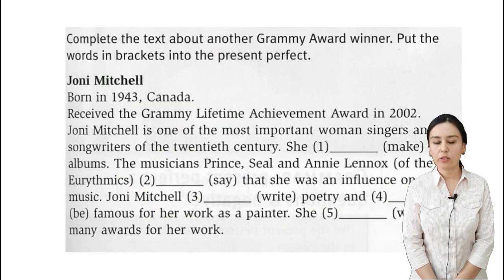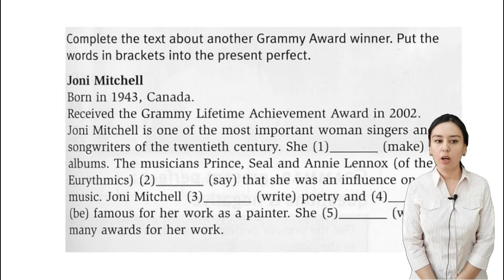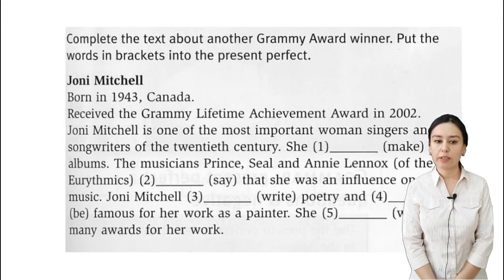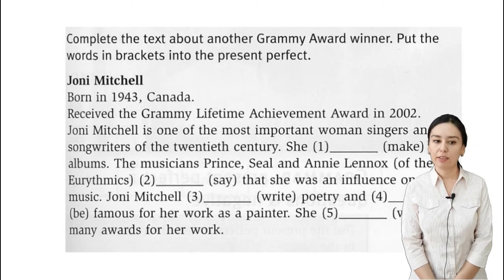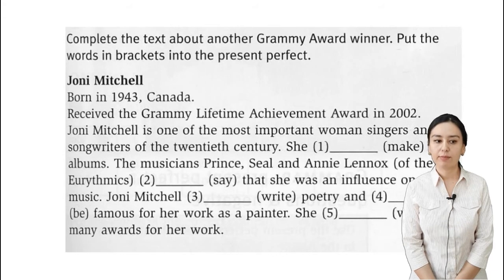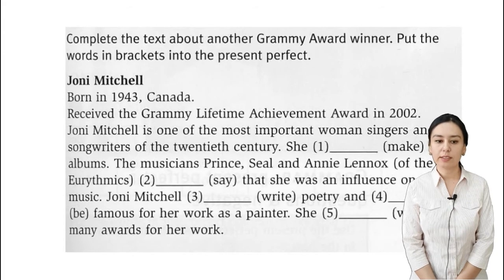Here is an extract from a text about a very famous and successful musician who was awarded a Grammy Award. The text has five blanks with verbs in brackets. Let's practise. Number one — Joni Mitchell: 'she has made 21 albums'. Next — 'musician has said'. Number three — Joni Mitchell 'has written'. The remaining blanks follow the same pattern.